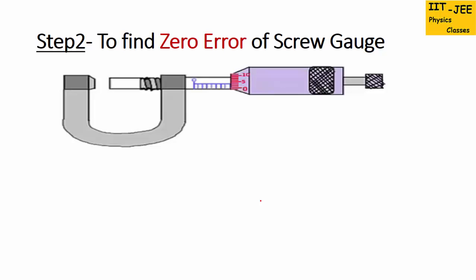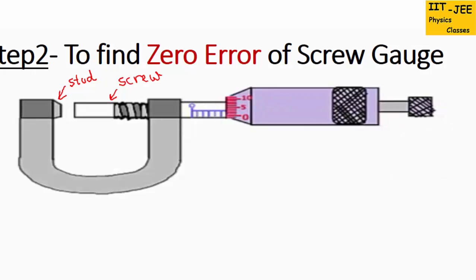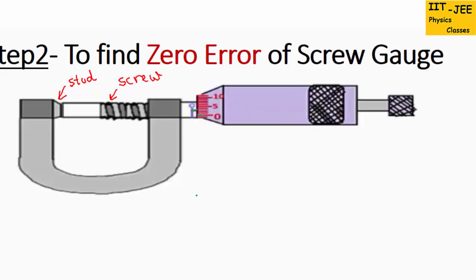Now step 2: we have to check if the screw gauge has zero error or not. We have discussed finding zero error in detail in screw gauge part 2, so make sure you watch part 2. Here we will bring these two ends together — this end is called the stud and this is the screw. Now these two ends are together. Ideally, the reference line should coincide with the zero of the circular scale. Here you can see the zero of the circular scale is below the reference line, so this screw gauge has a positive zero error.